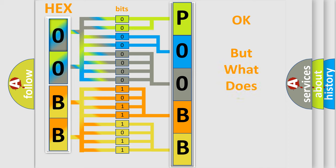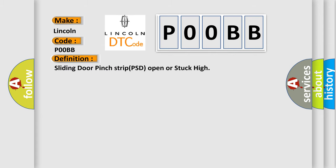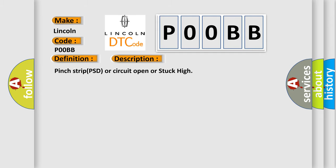We now know in what way the diagnostic tool translates the received information into a more comprehensible format. The number itself does not make sense if we cannot assign information about what it actually expresses. So, what does the diagnostic trouble code P00BB interpret specifically? Lincoln car manufacturers. The basic definition is: Sliding door pinch strip PSD open or stuck high. And here is a short description of this DTC code: Pinch strip PSD circuit open or stuck high.